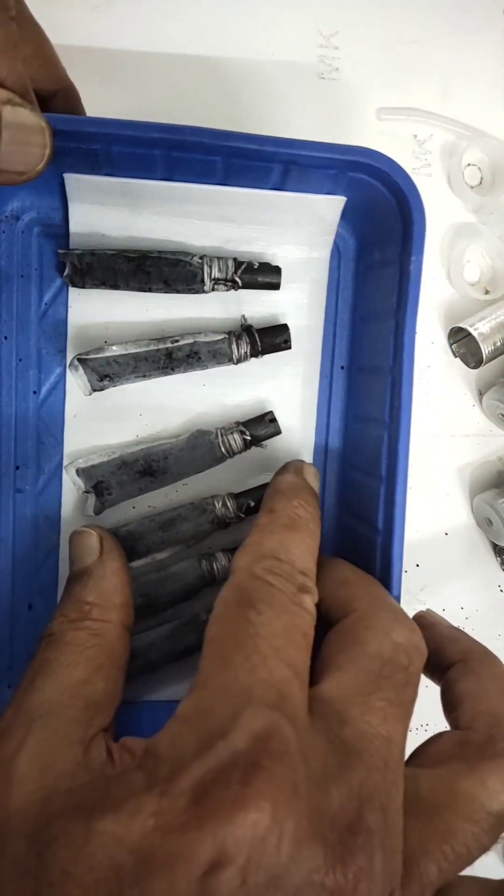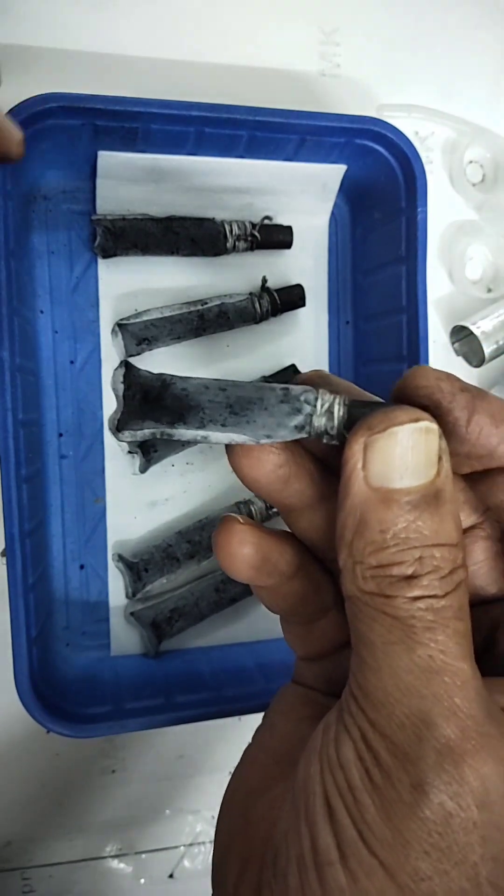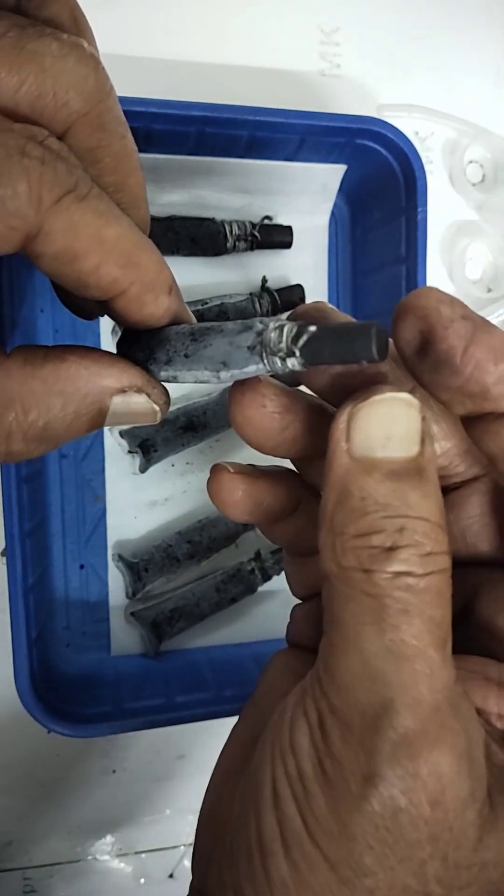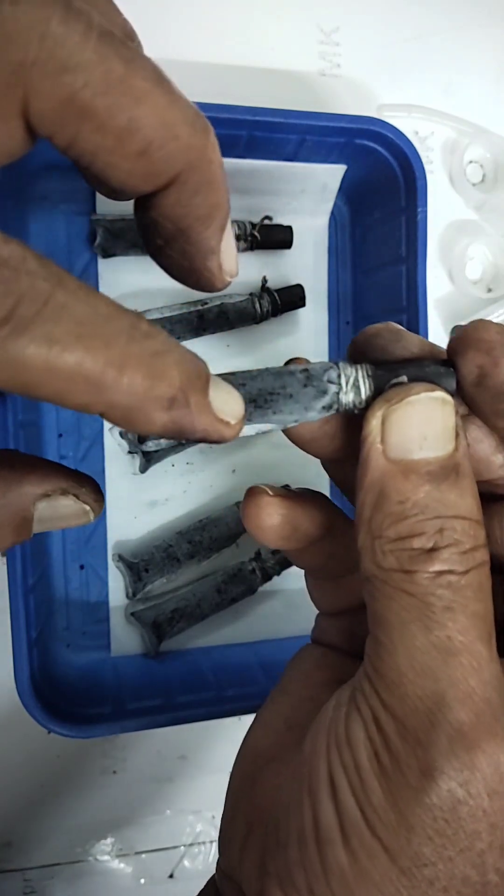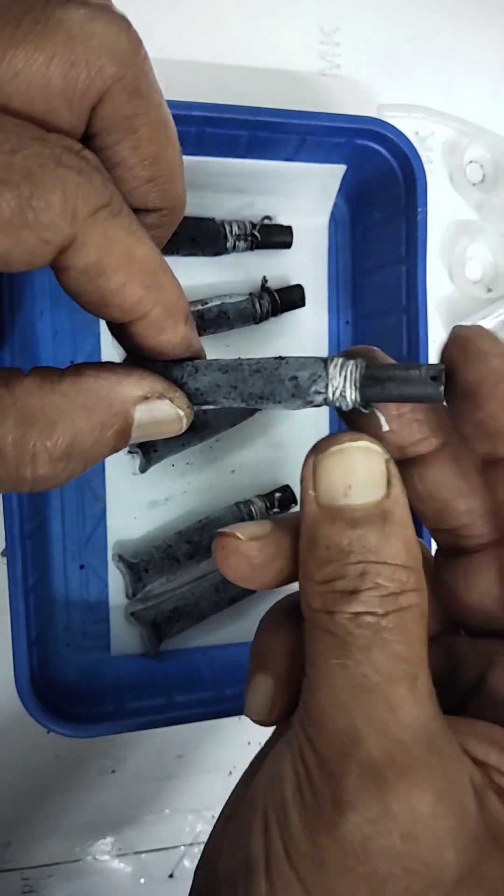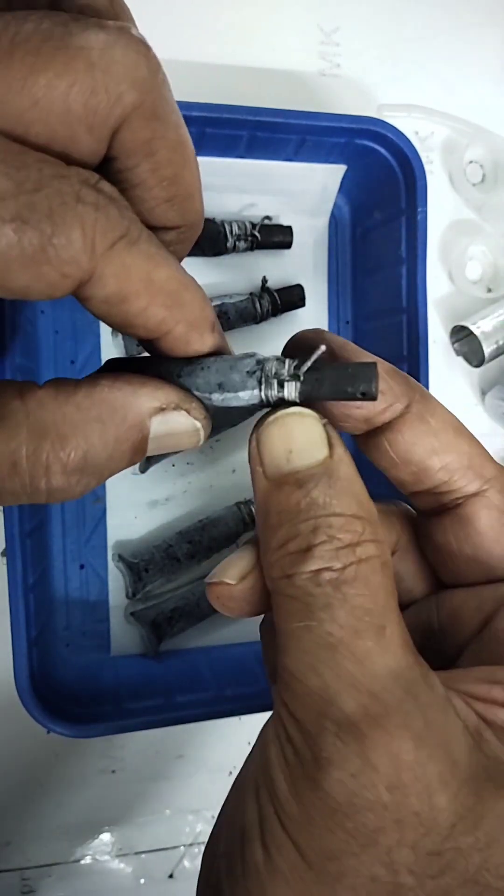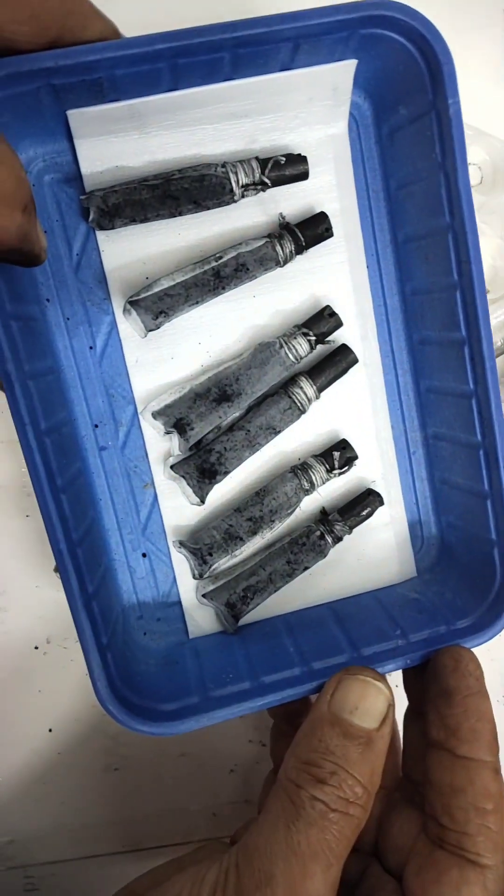You can see this carbon rod. In the nylon bags I have inserted this carbon rod into that, then carefully I have filled this carbon black powder into that. After filling, slowly you tie it like this. I have prepared 6 electrodes.